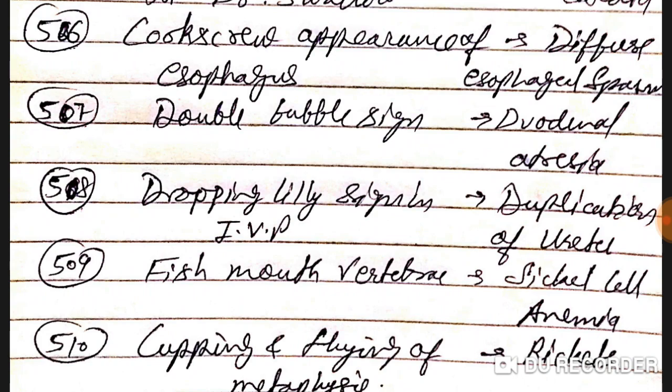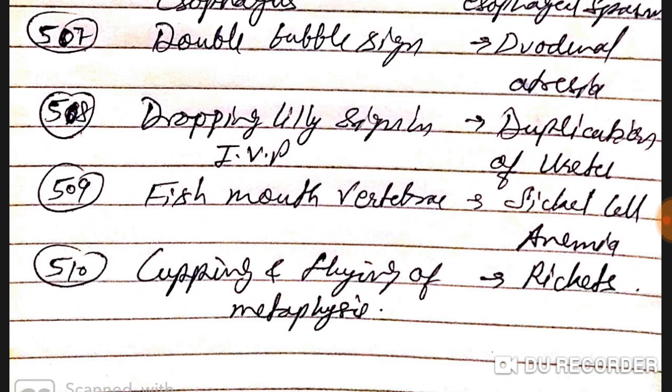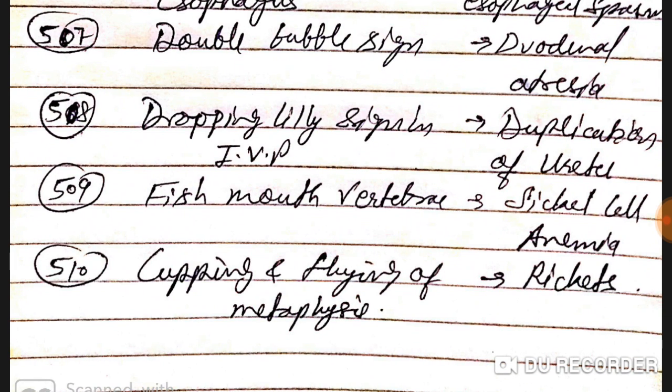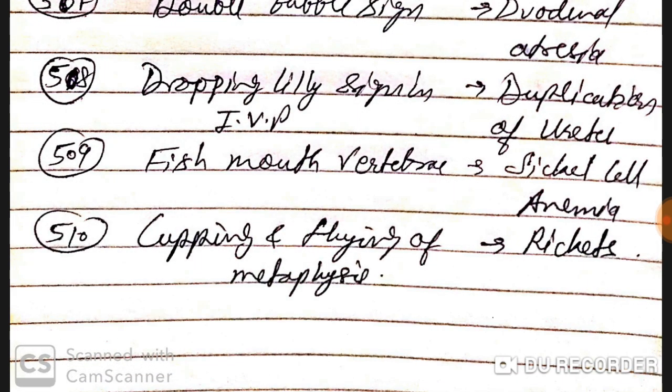Double bubble sign is seen in duodenal atresia. Dropping lily sign in IVP is seen in duplication of ureter. Fish mouth vertebra is seen in sickle cell anemia.